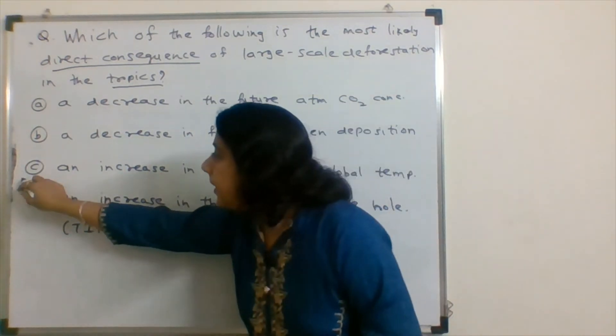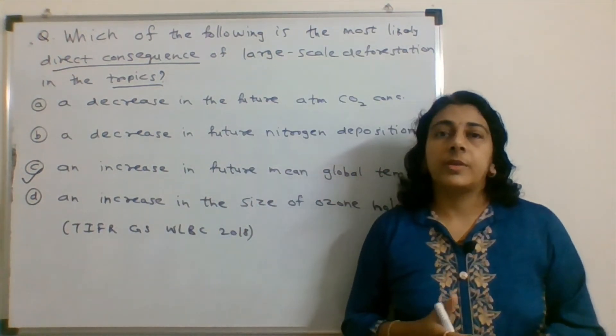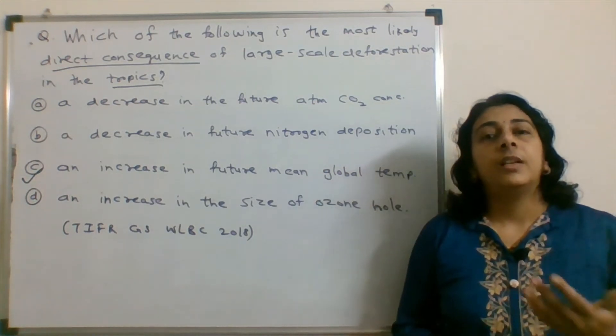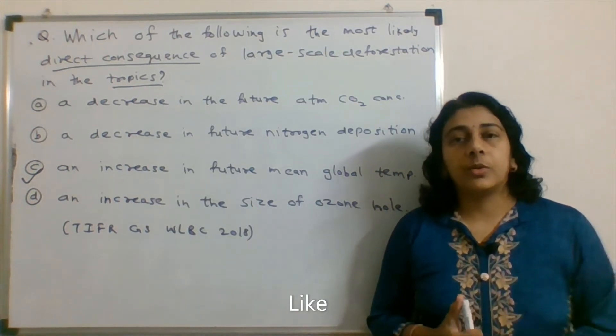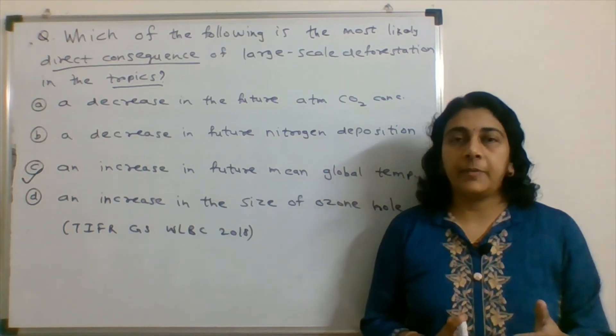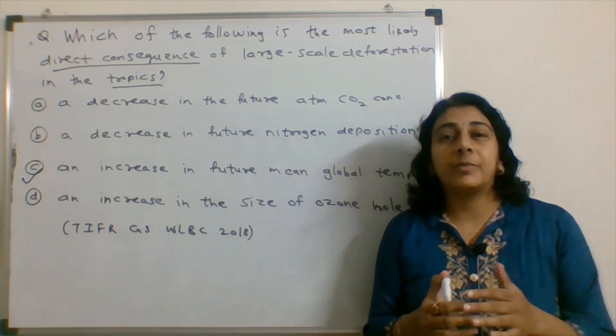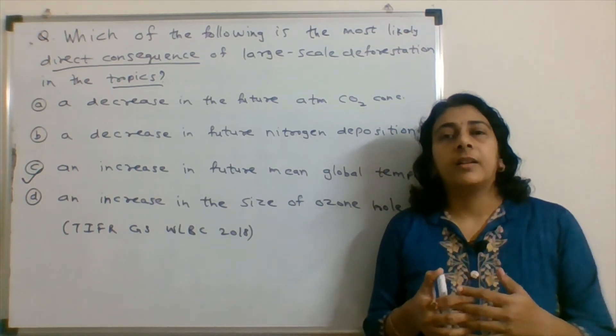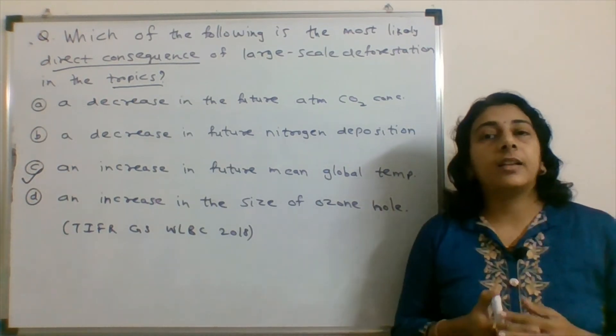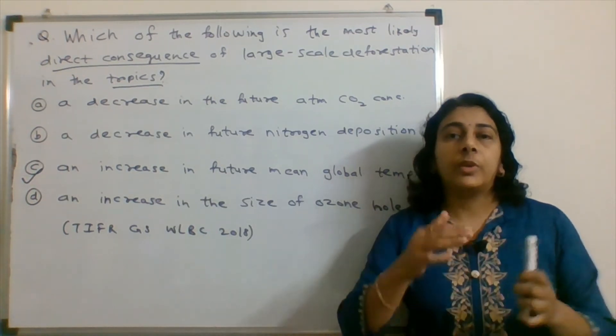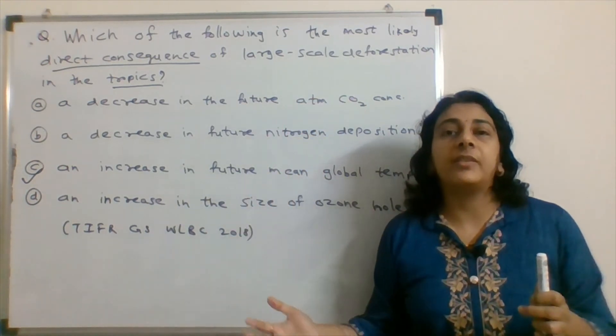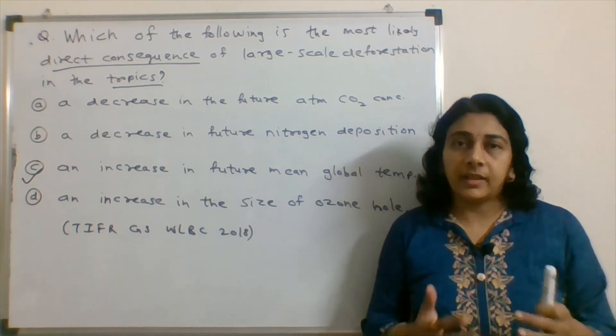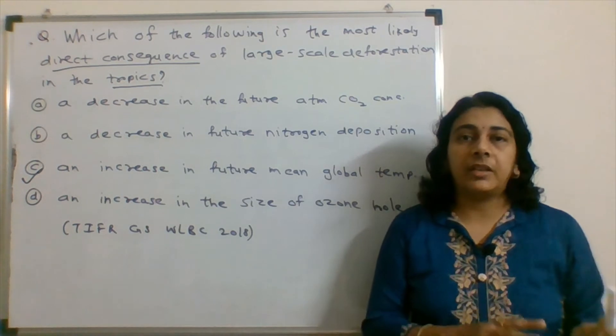This is also a correct answer, but when we talk about direct consequence and deforestation in tropics, the direct consequence is Option C, an increase in future mean global temperature. First temperature will increase, and there is still emission of chlorofluorocarbon in our atmosphere going on for a longer period of time, then it is going to affect the ozone hole present in our polar regions. If greenhouse gas emission increases in tropical regions, those gases can transfer through air and reach polar regions, where they deposit and affect the ozone hole.